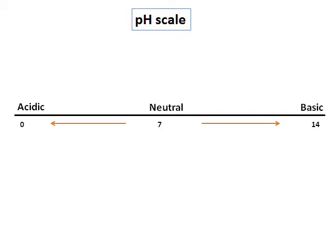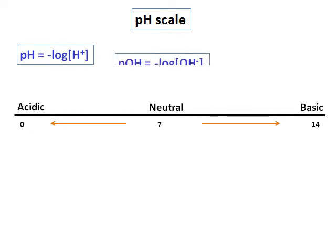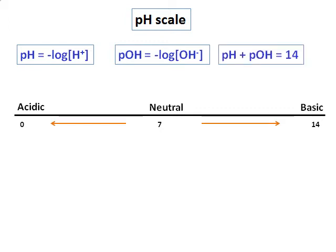So 14 is the highest basic and pH based on the hydrogen ion concentrations is defined as pH is equal to negative log of concentration of H positive and it can also be written in terms of pOH which is equal to negative log of concentration of OH minus and anytime pH and pOH are added, we get a number equal to 14. So pH plus pOH is always equal to 14.